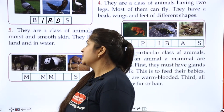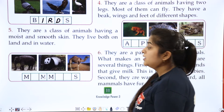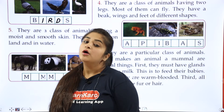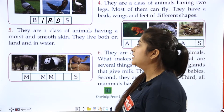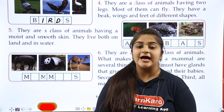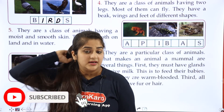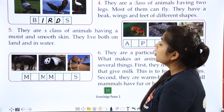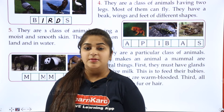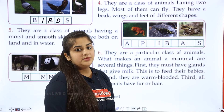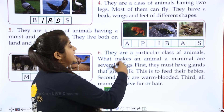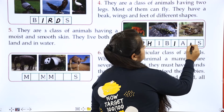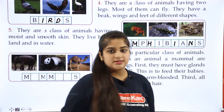The next class of animals has a moist and smooth skin — their skin is very soft and smooth. They live both on land and in water. These animals are known as amphibians. A-M-P-H-I-B-I-A-N-S.